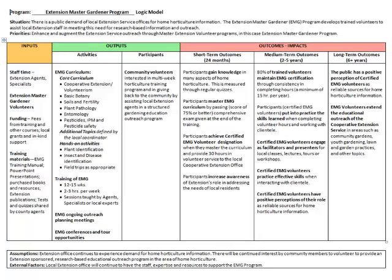Four short-term outcomes are featured, including volunteers gaining knowledge, mastering curriculum, and achieving a certification designation, as well as increasing awareness of Extension's role. Five medium-term outcomes are noted, including volunteers maintaining certification status, practicing skills learned, presenting classes, interacting effectively with clients, and having positive perception of their role as a horticulture volunteer. Two long-term impacts are listed: the public having a positive perception of the Extension Master Gardener volunteers, and Extension Master Gardener volunteers extending outreach of the Cooperative Extension Service.